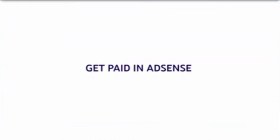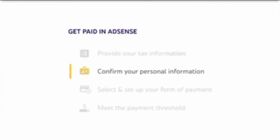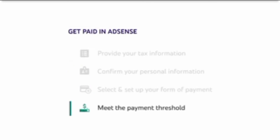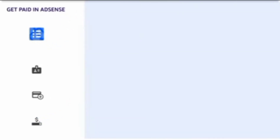To get paid in AdSense, you'll need to provide your tax information, confirm your personal information, select and set up your form of payment, and meet the payment threshold. Let's walk through each one of these steps.